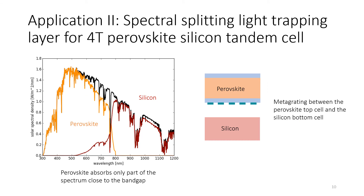The next application is a spectral-splitting light-trapping layer for four-terminal perovskite-silicon tandem cells. The problem is that in a solar spectrum absorbed by a perovskite-silicon tandem cell, ideally everything below the perovskite bandgap — in our case 800 nanometers — is absorbed in the perovskite, and everything above is absorbed in silicon. In reality, there is always a tail close to the bandgap that is not absorbed in the perovskite, usually because it cannot be made thick enough, and this light ends up in the silicon cell. We want to include a spectral-splitting light-trapping layer on the bottom side of the perovskite that reflects the light back so it is completely absorbed there.